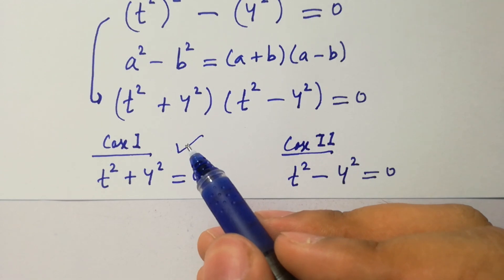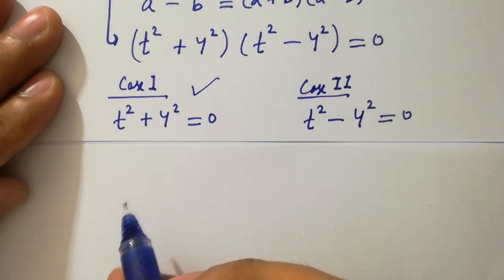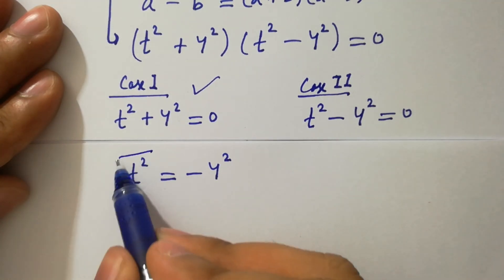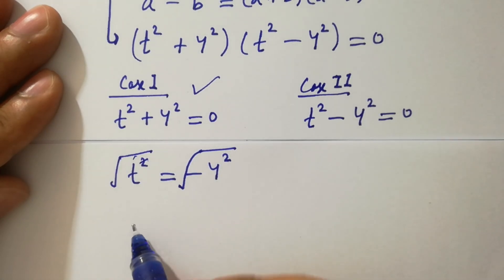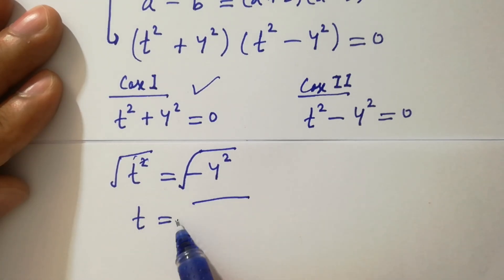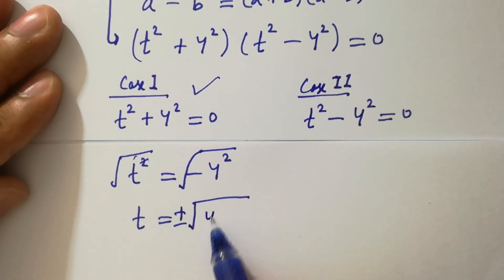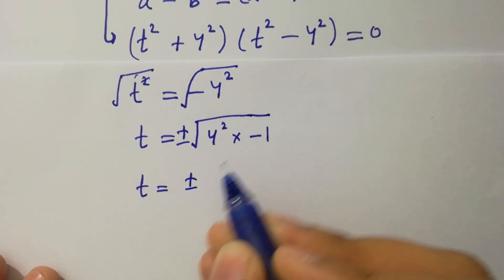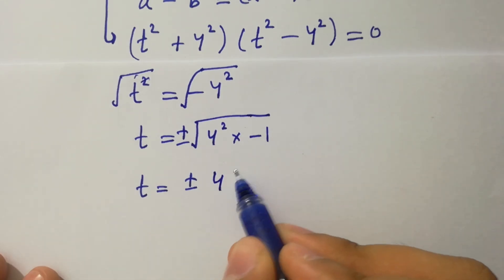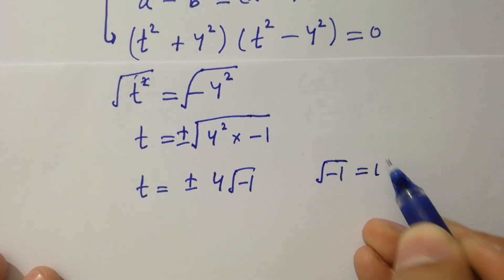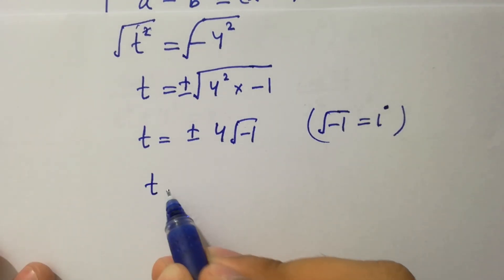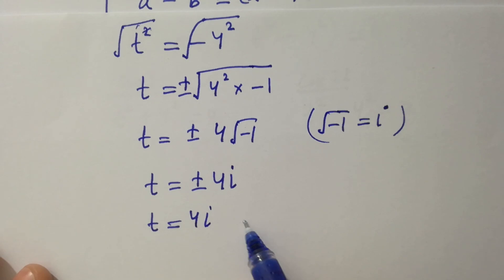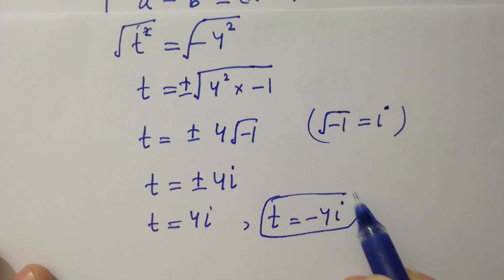Case one: t squared plus 4 squared equals 0, so t squared equals minus 4 squared. Taking square root on both sides, the square cancels from the square root and we have t equal to plus or minus the square root of 4 squared times minus 1. Since the square root of minus 1 is i, we have t equal to plus or minus 4i. Two solutions: t equals 4i and t equals minus 4i — complex solutions.